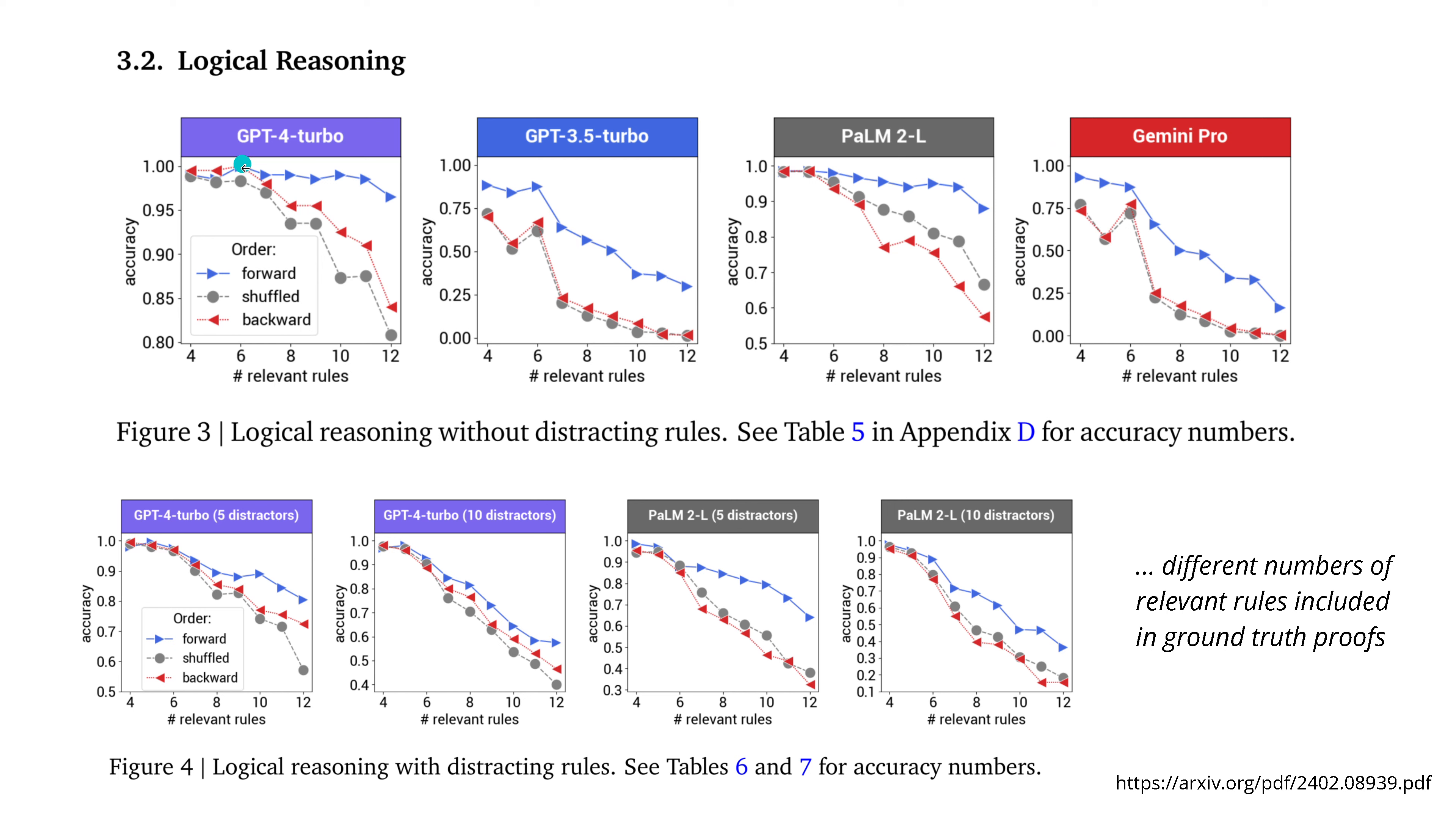Logical reasoning. GPT-4 Turbo, Chat GPT, forget PaLM 2 and Gemini Pro. Let's look just at those examples. The order, the forward order in blue, you see here GPT-4 Turbo and the number of relevant rules goes from four to 12. You see that GPT-4 Turbo stays at about 0.97, so between 97% and 100% correct. Beautiful if the linear timely sequence is mapped here to the order of the sentences.